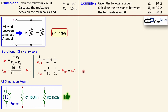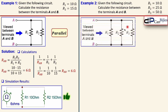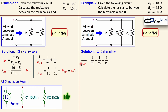The second parallel example is a little more complicated — we now have three resistors. We cannot use the product-over-sum formula since it is only valid for two resistors, so we use the generic formula: one over R_ab equals one over R1 plus one over R2 plus one over R3. For a fourth or fifth resistor you simply continue adding terms — the format is the same regardless of how many resistors are in parallel.